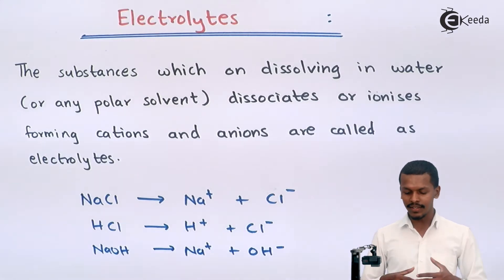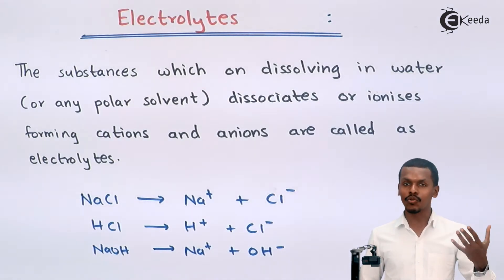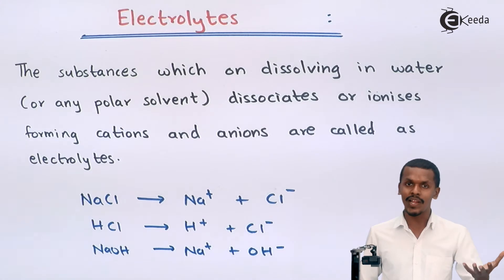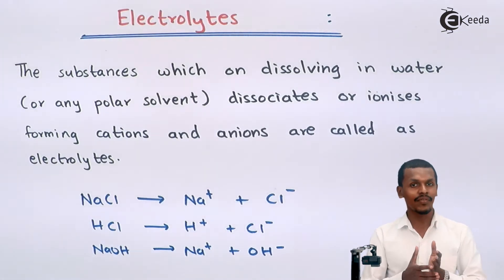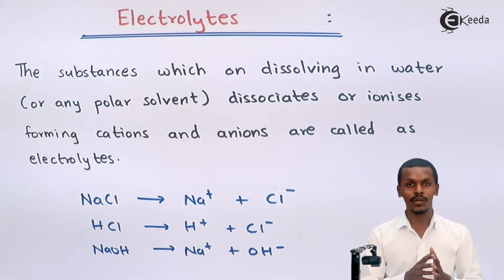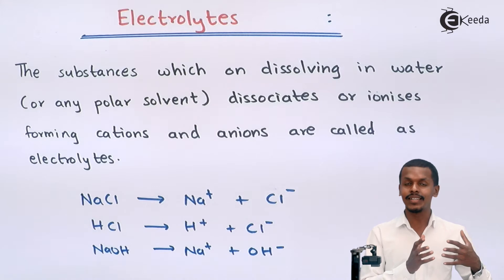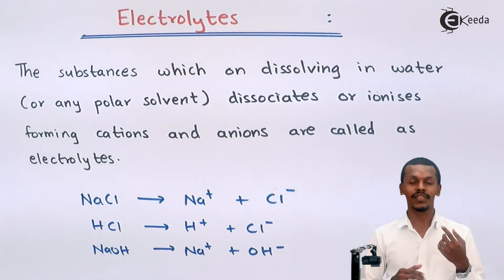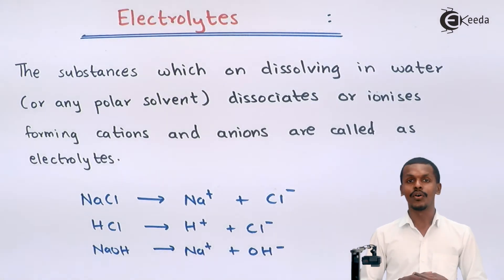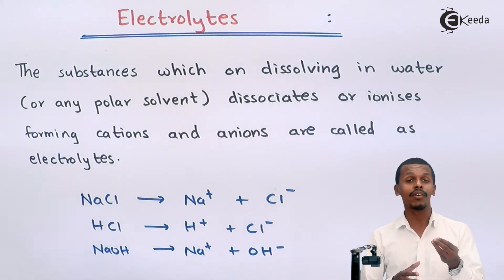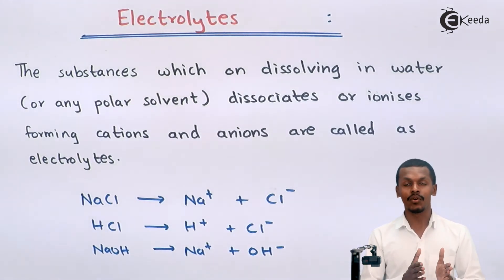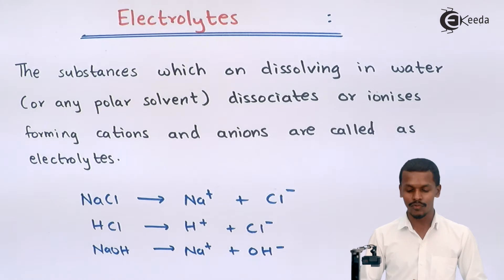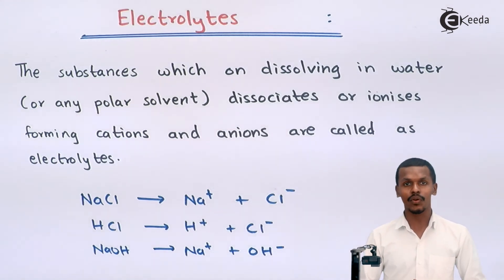So basically we could say it is not only a strong acid or a strong base that we are talking about. Any kind of salt, whether it is from a strong acid or strong base, or whether it could be a weak acid and weak base, is also called an electrolyte — because whether it dissociates completely or not, it would still be called an electrolyte. Electrolytes can be ionic compounds, covalent compounds, or salts that on dissolving in water will dissociate or ionize. So the classification of electrolytes is also very necessary for us to understand.